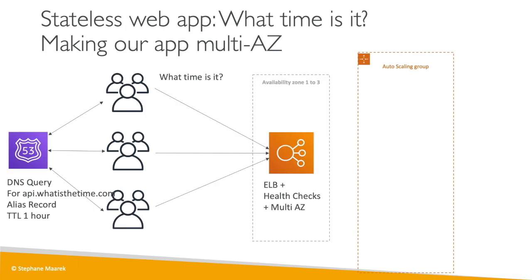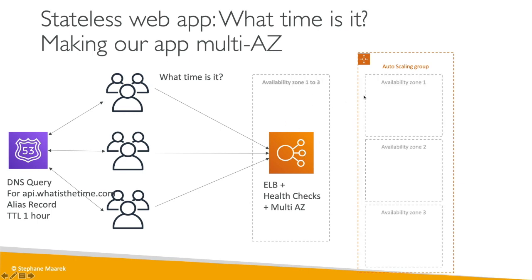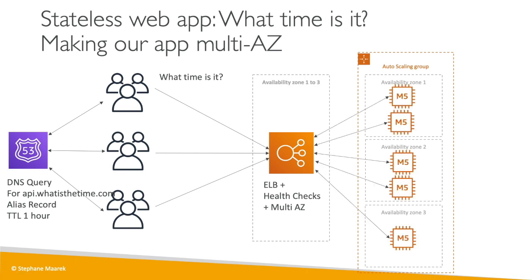So let's change things. Our ELB will now have health checks and be multi-AZ, launched across AZ1 to AZ3. Our auto scaling group will also span multiple AZs — maybe two instances in AZ1, two in AZ2, and one in AZ3. Now if AZ1 goes down, AZ2 and AZ3 still serve our traffic. We've made our app multi-AZ, highly available, and resilient to failure.